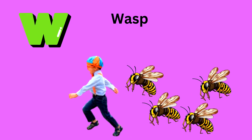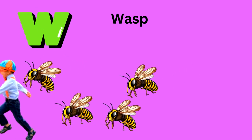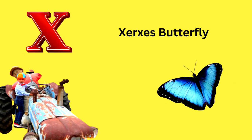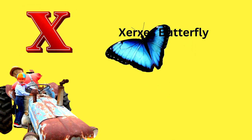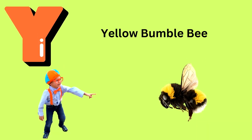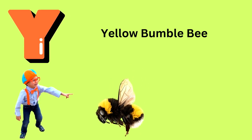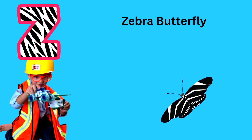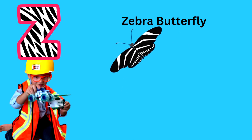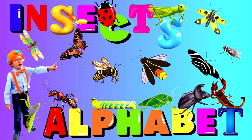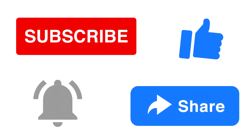W is for Wasp. Y is for Yellow Bumblebee. Z is for Zebra Butterfly.